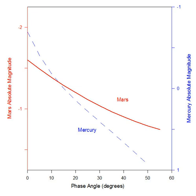The apparent brightness of Mercury as seen from Earth is greatest at phase angles 0 degrees, when it can reach magnitude −2.6. At phase angles approaching 180 degrees, the planet fades to about magnitude +5, with the exact brightness depending on the phase angle at that particular conjunction. This difference of more than 7 magnitudes corresponds to a change of over a thousand times in apparent brightness.